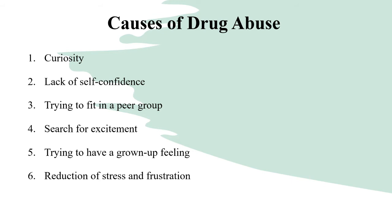Habitual taking of alcohol can lead to drug abuse. Number three: trying to fit in with a peer group. A teenager may start smoking, taking alcohol, or drugs in order to fit in with his friends. Young people like to do what others of their age do, so you have to be careful who you choose as your friends so they won't influence you negatively. Number four: search for excitement — some people take drugs because it feels good and gives them excitement.